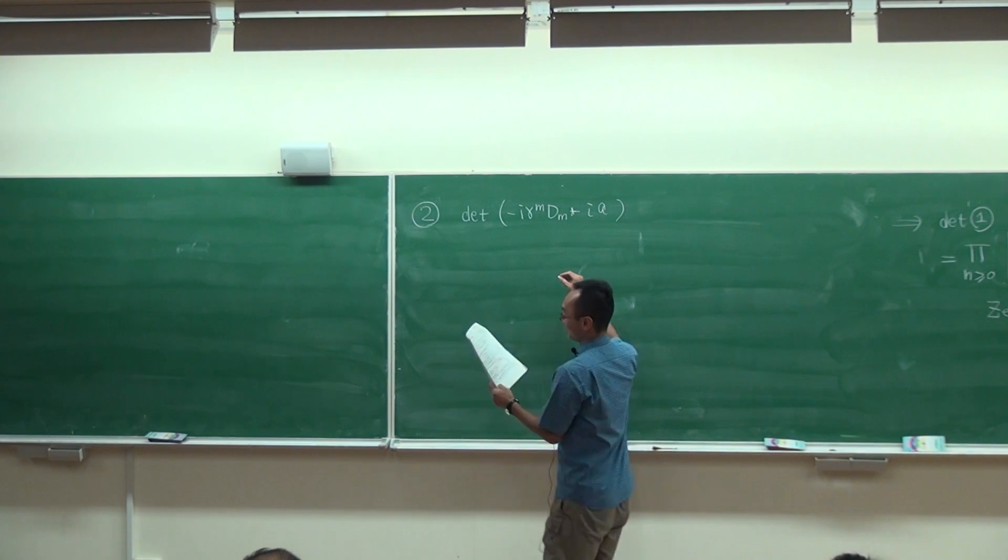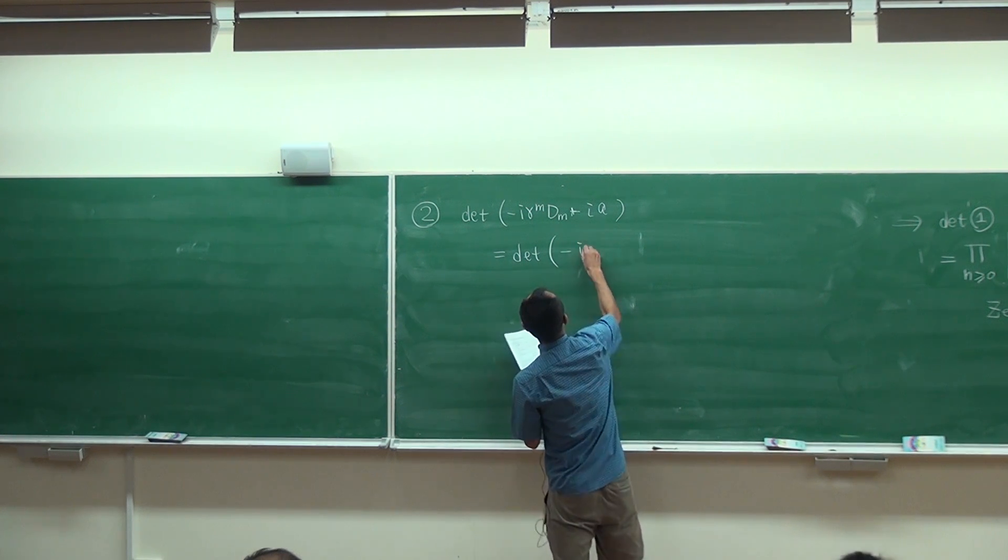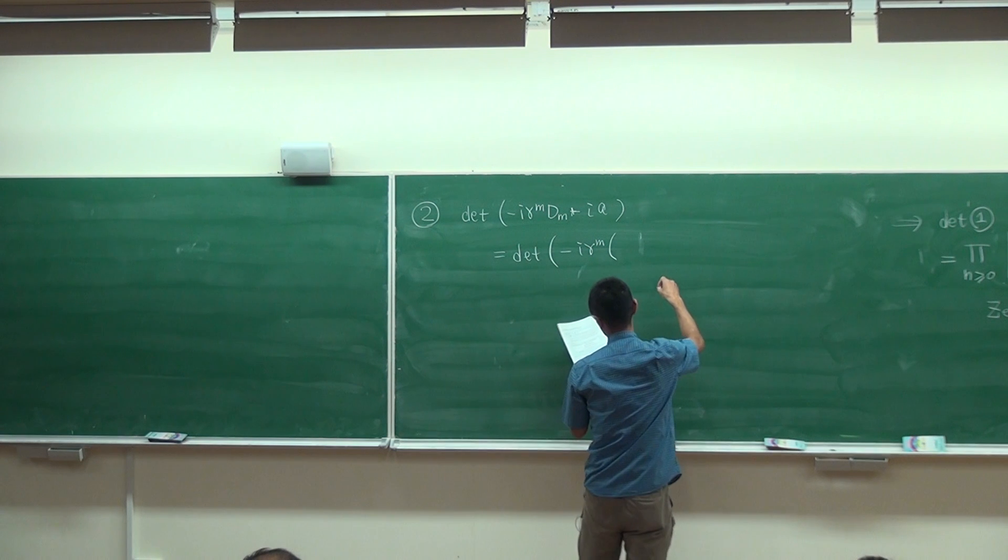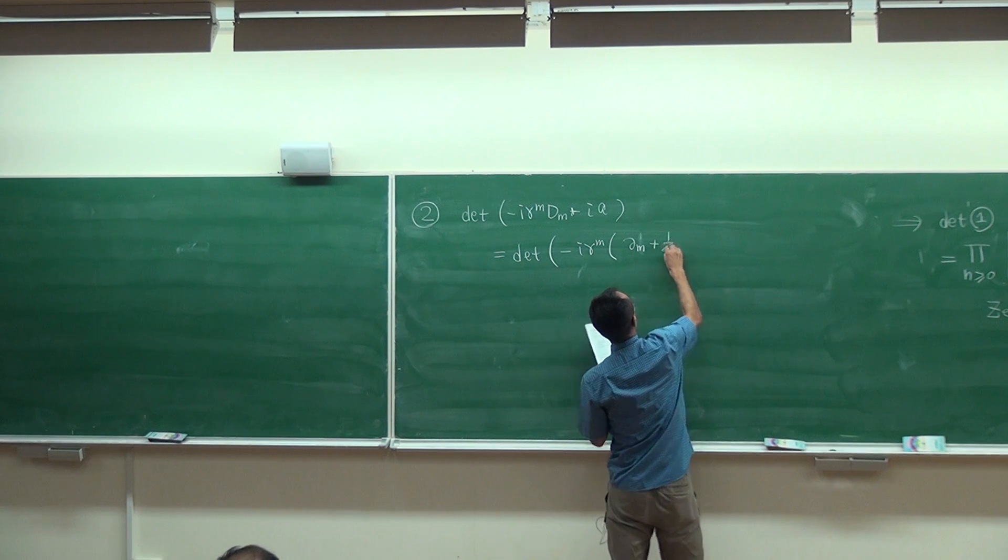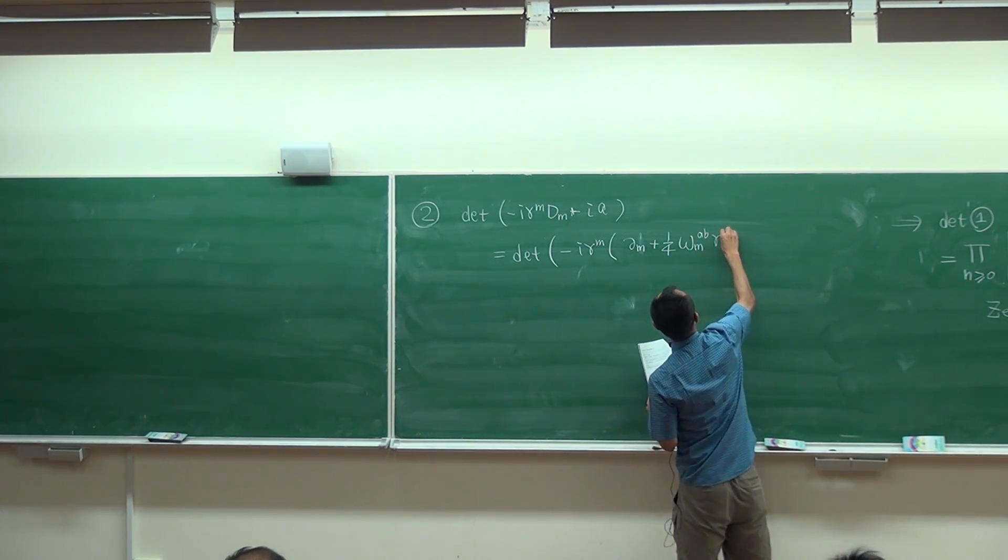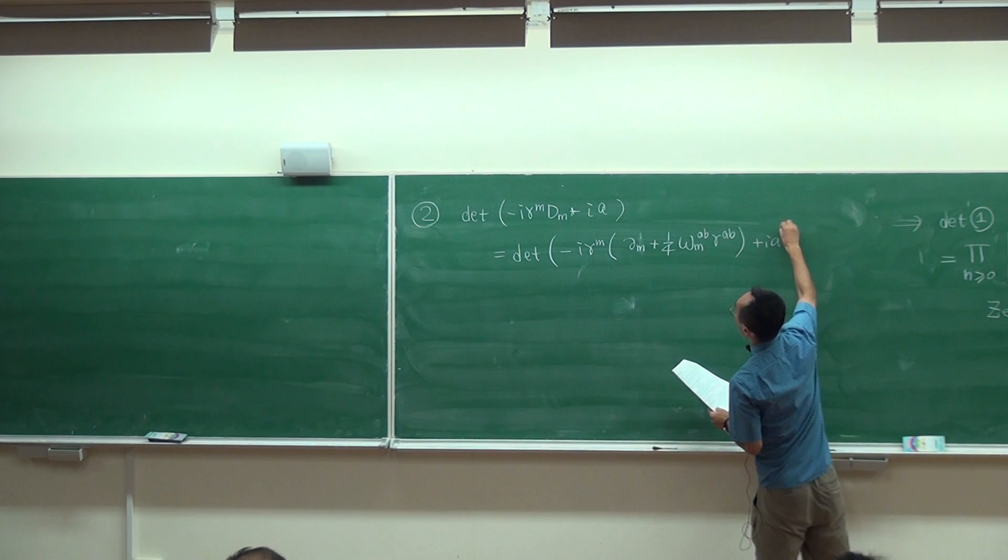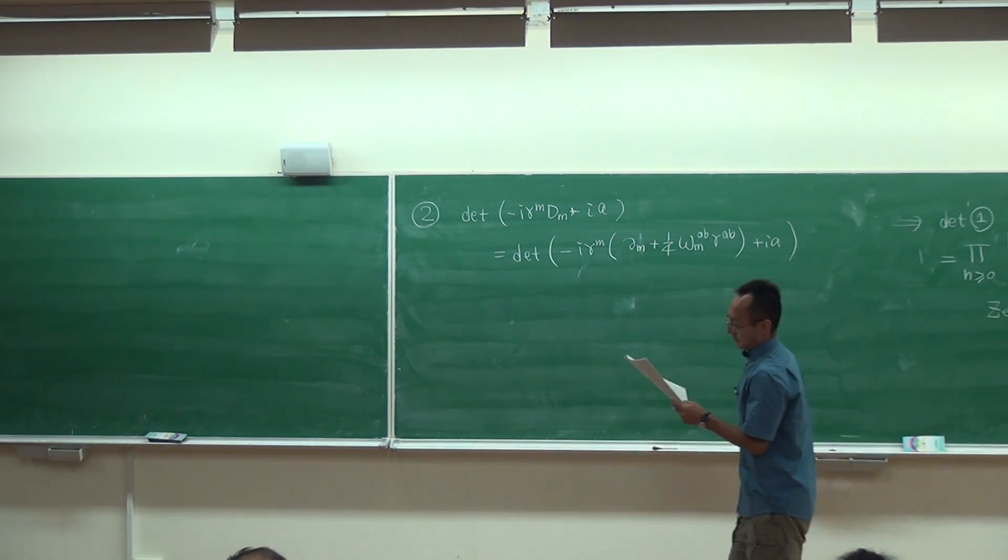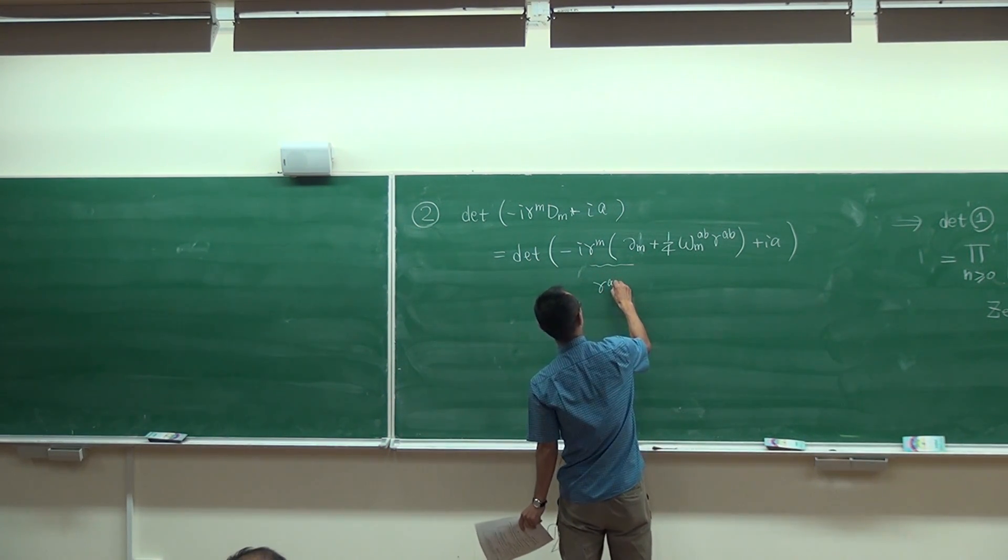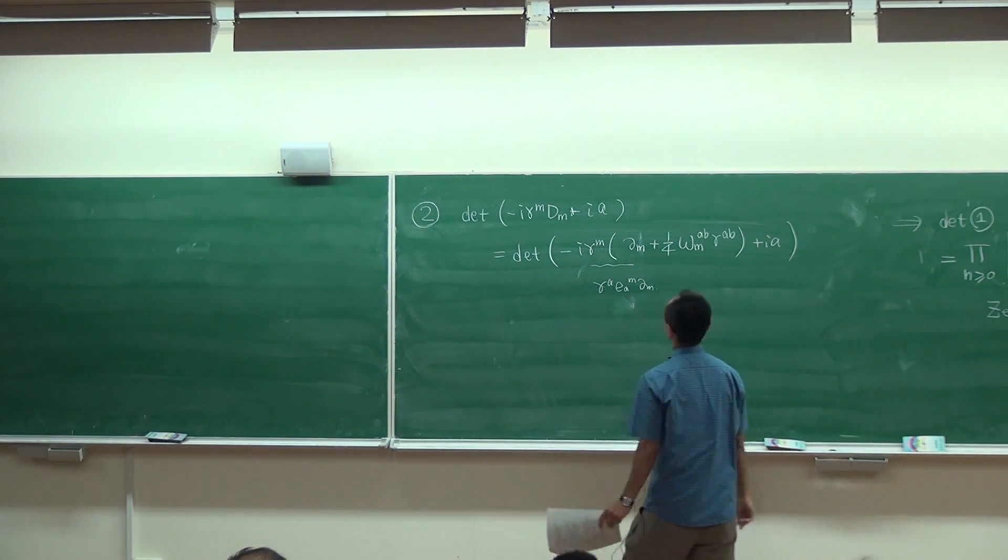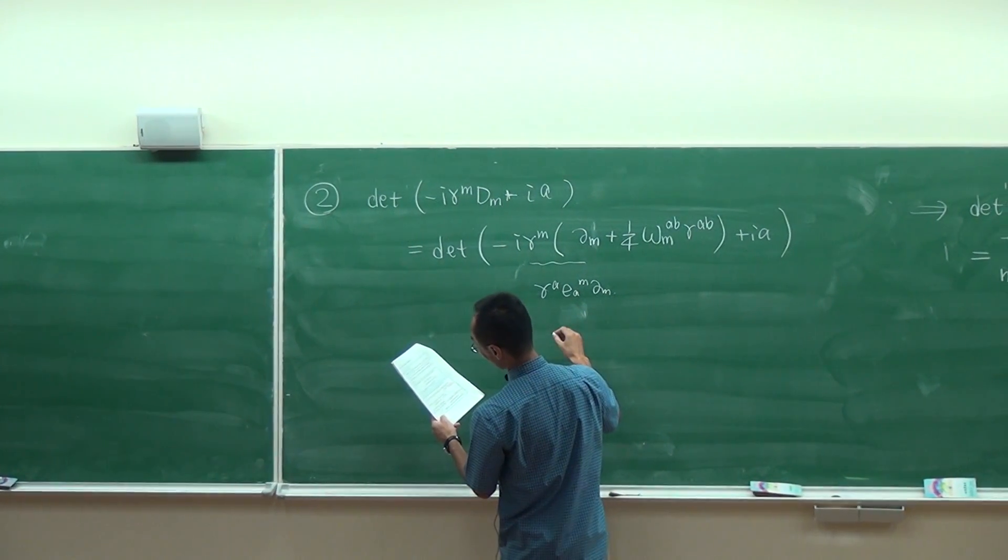Let's rewrite this. First I rewrite this covariant derivative using ordinary derivative and spin connection. And then I write this. This part is the number A and B, so this can be rewritten as follows.